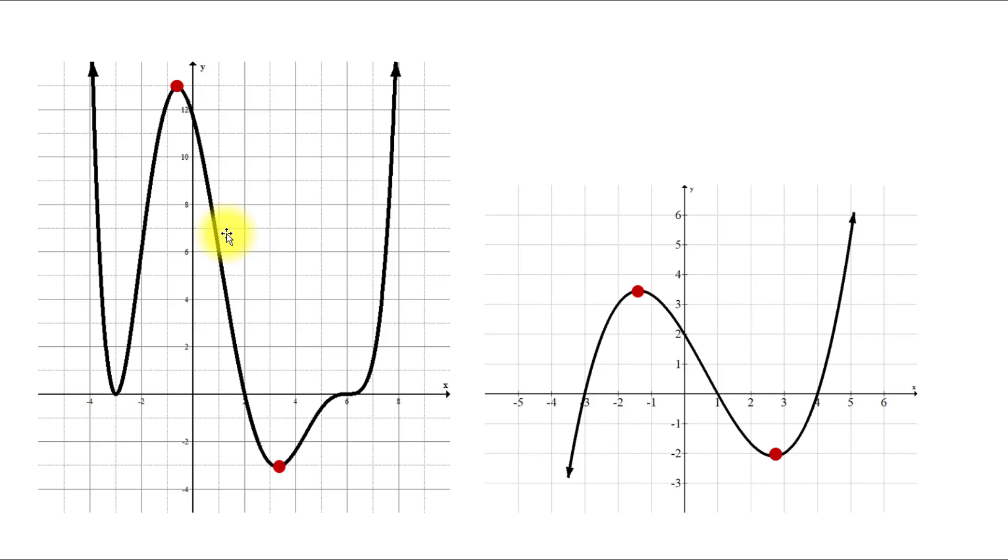Turning points can be put in two different groups. Maximum points, that's where the graph forms a peak, and the turning points that we call minimum because at those points the graph changes its direction from decreasing to increasing and forms a valley.